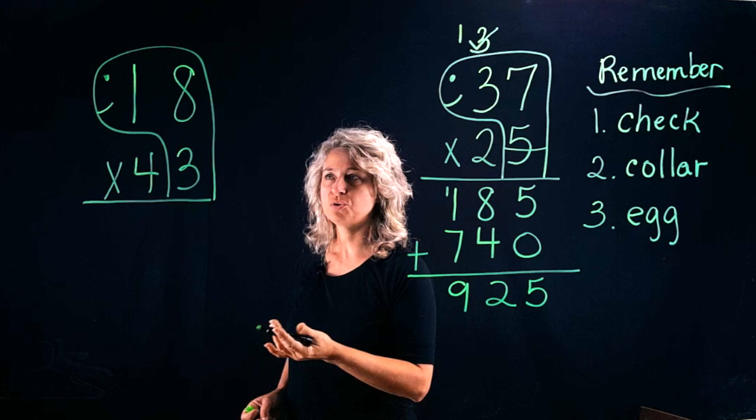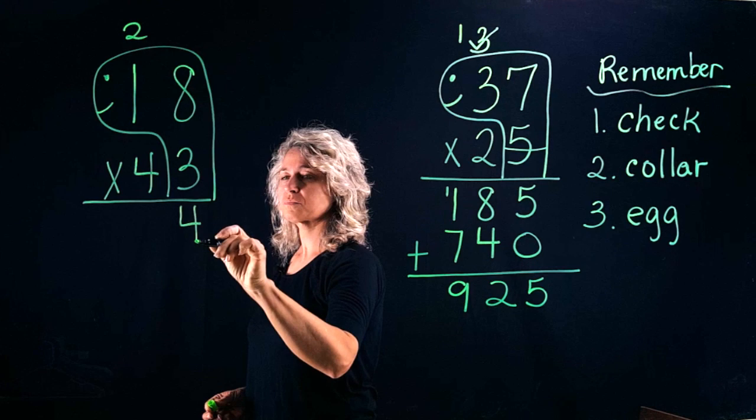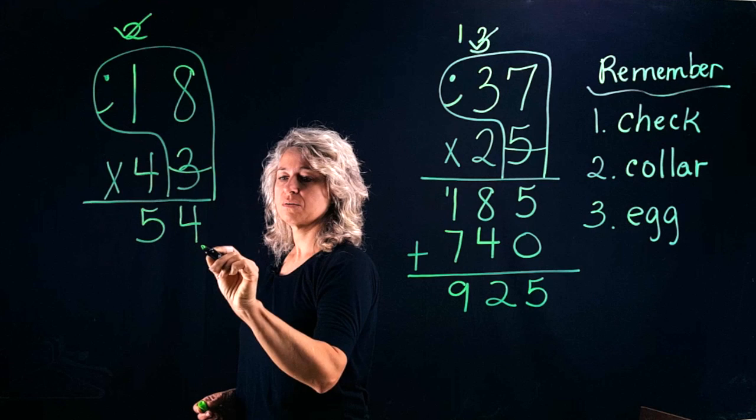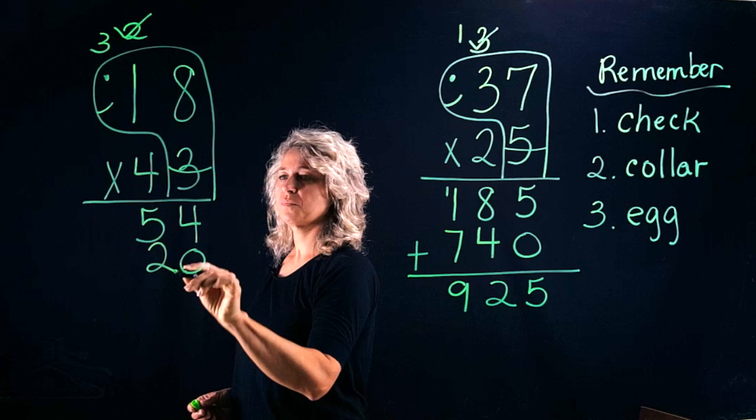Three times eight is twenty-four. Three times one is three, plus two more is five. Here we go with our three steps: check, collar, lay the egg. All right, now we're ready for the tens place. Four times eight is thirty-two. Four times one is four, plus three is seven.